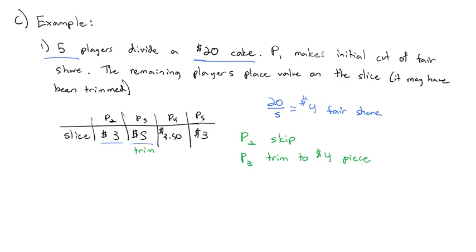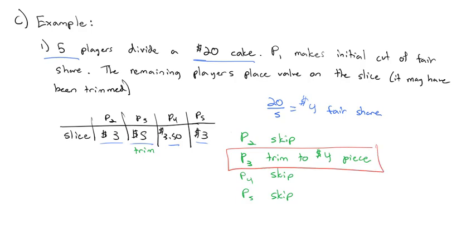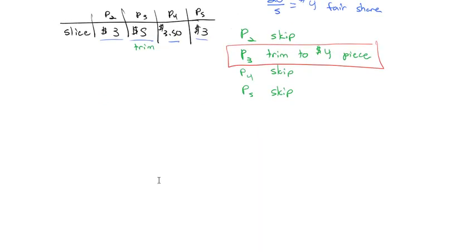Player four looks at the trimmed piece and says that's only worth $3.50, and skips. Player five looks at the piece and says that looks like it's only worth $3.50, and also skips. So player three gets the piece because player three was the last one to cut it — a piece that player three values at $4. Then we repeat the process with the second round.